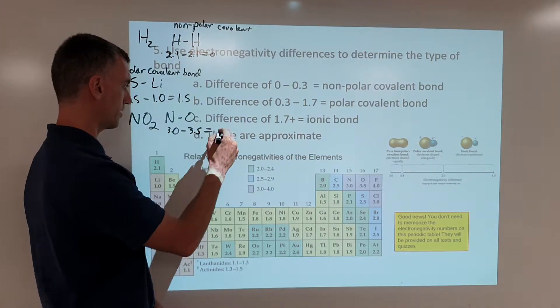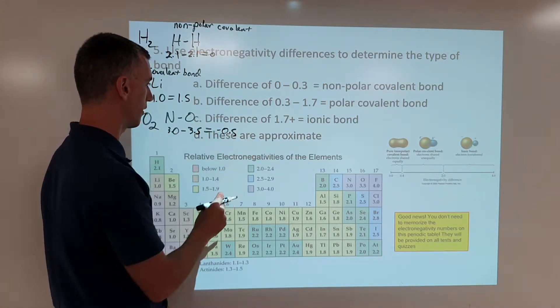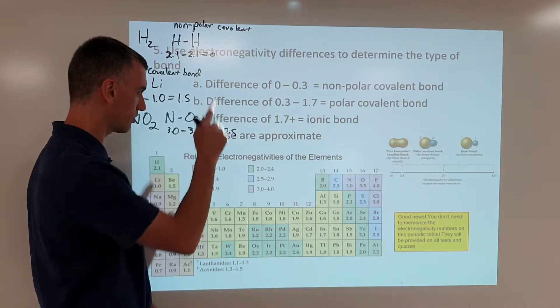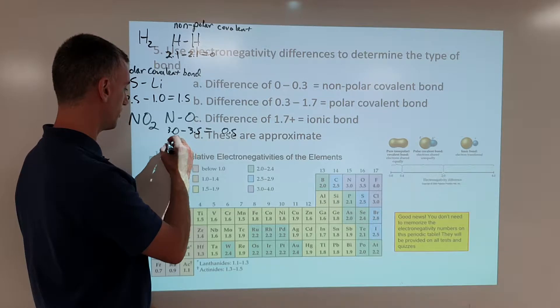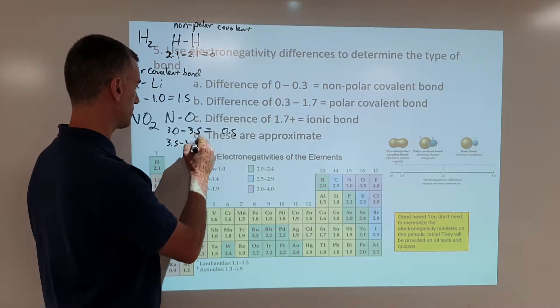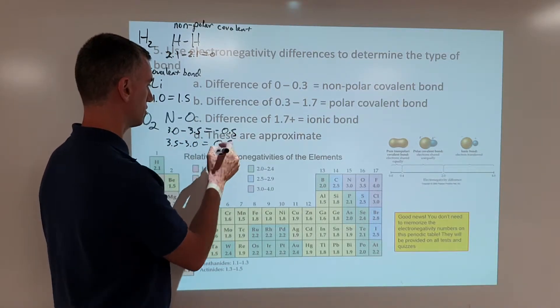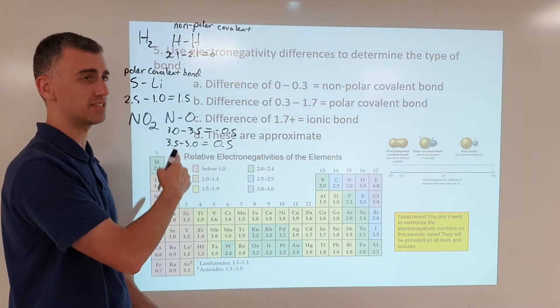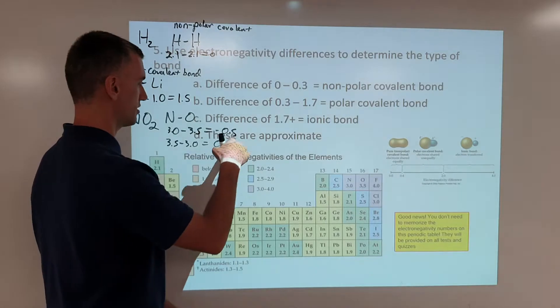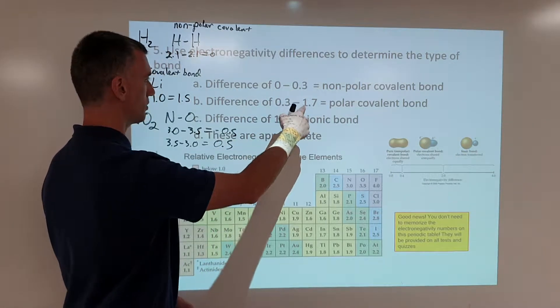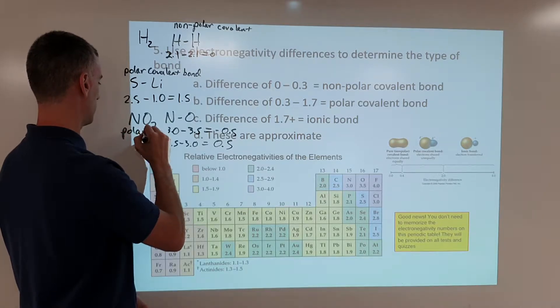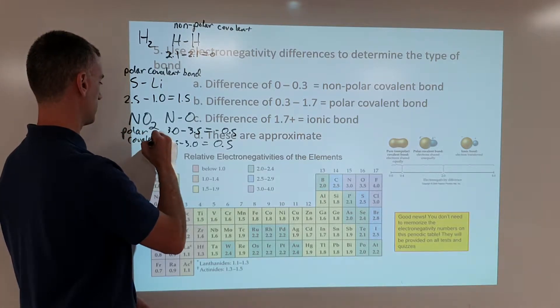Now, if you do it on your calculator, 3.0 minus 3.5, that's negative 0.5. Who cares? You just care about the absolute value. So we just ignore the negative sign. If you had done it the other way around, 3.5 minus 3.0, you get the exact same number. So negative 0.5, positive 0.5, as far as this goes, it doesn't matter. It's the exact same thing, because it's more than 0.3 and less than 1.7. So this would be a polar covalent bond.